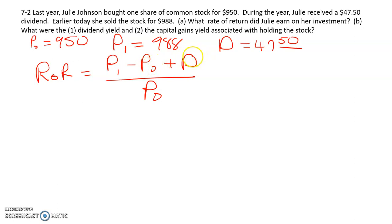In that case, we'd have the ending minus beginning, and then we'd add the coupon or interest payments and divide those by the beginning price. So what does that look like? 988 minus 950 plus 47.50 divided by 950, so we get 0.09 or 9%. So that's part A.